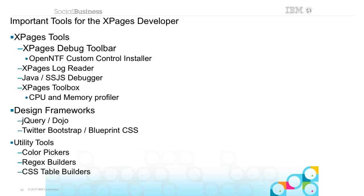The XPages log reader — I think Jacob is his first name — is a great application that gives you easier access to log files buried on your server. We run this on production; it's just a Notes database that exposes those logs. We now have a Java debugger and a server-side JavaScript debugger. I saw some demos on that at Connect. Dan O'Connor did a show on episode 99 showing the server-side JavaScript debugger — learn how to use it.